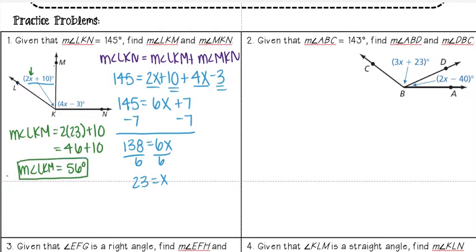And then to find the measure of angle MKN, I can do this a couple of different ways. One way is to substitute in 23 for x. 23 times 4 I get 92, then 92 minus 3 I get 89 degrees.